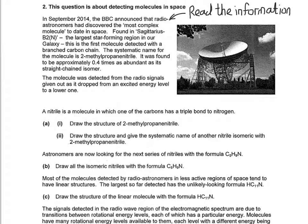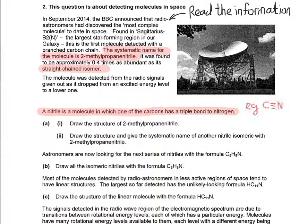The first piece of chemistry that comes from the A-level syllabus is 2-methylpropanitrile. The molecule is detected when the radio signal is given out as it dropped from an excited energy level to a lower one. That part you don't have to worry too much about, but essentially what it means is the electrons within the atoms are being excited by being struck by energy from outer space. It says a nitrile is a molecule in which one of the carbons has a triple bond to nitrogen.